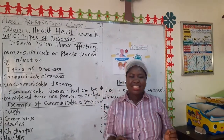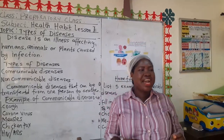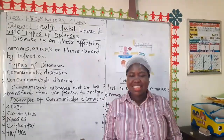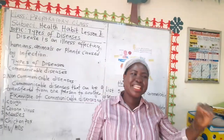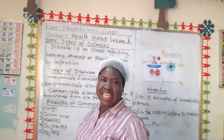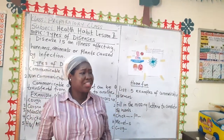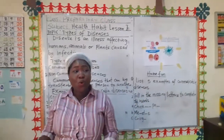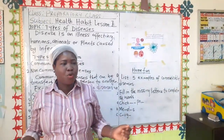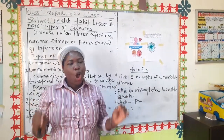There are different types of diseases that have really affected humans, animals, and plants. There is one particular one that has really kept us at home. That is why mommies and daddies are at home, not going to work. We are supposed to be in school but we are at home, because they said stay safe at home.